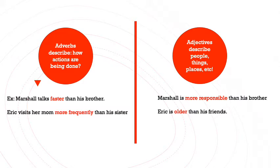On the other hand, adjectives describe how people, things, and places are. In this case, we have 'Marshall is more responsible than his brother.' What are we comparing here? Marshall and his brother, and we are referring to the fact that Marshall is more responsible than his brother. So we are describing Marshall.